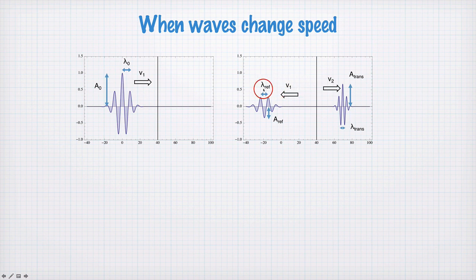we have some reflected wavelength, some reflected amplitude. On the other side, we have v₂, so a different velocity. We have a transmitted amplitude and a transmitted wavelength.